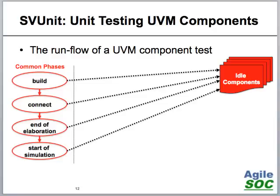Let's take a look at the run flow first. In a simulation all UVM components go through a few common UVM phases: build, connect, end of elaboration, and start of simulation. For all the components instantiated in our collection of unit tests — we only have one unit test here — these common phases apply just as they normally do in a UVM test bench. All the phase methods are called for each component.